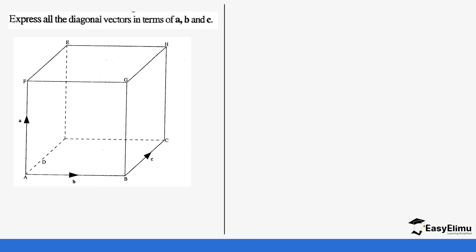Now we want to express the diagonals of a cube in terms of A, B, and C. Remember this is a cube, so FA is equal to BE, meaning that vector is also A. Also BC is the same as AP, so if AP is C, that side is C. The remaining edges are labeled accordingly: these sides are B, these are also B, and these are C as well, and this side is A.